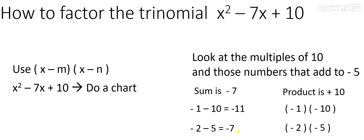So clearly, we have found our desired pair. So the factored form is, therefore, x minus 2, bracket x minus 5.